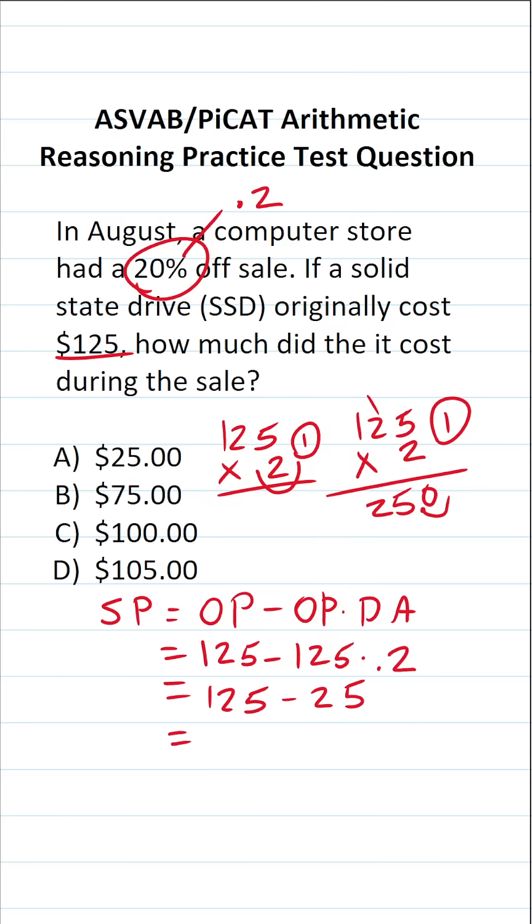125 minus 25 is going to be 100. So in other words, during this 20% off sale, the SSD which originally cost $125 is now $100.